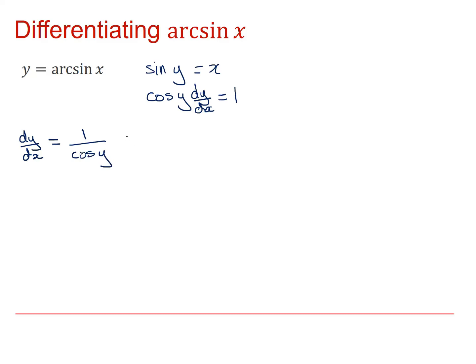But I can rewrite cos y in terms of sine, and I can rewrite this expression then as one over the square root of one minus sine squared y. And I'm going to need a plus minus because I've just taken a square root here, so I need to consider both.